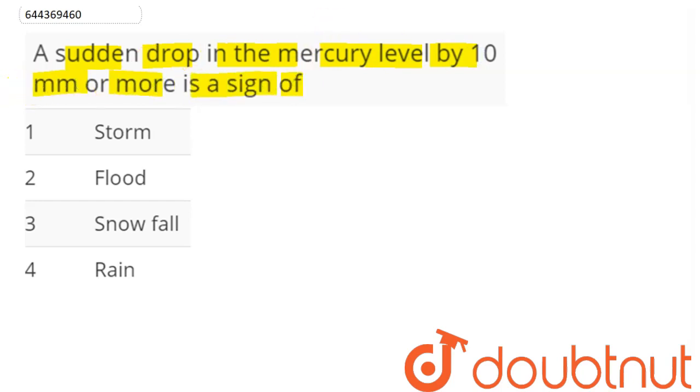Atmospheric pressure 1 atm is equal to 760 mm of mercury. A 10 mm drop in mercury represents a significant drop in pressure.